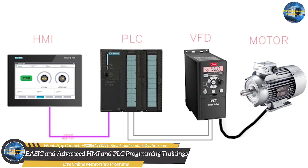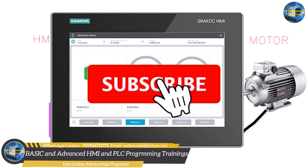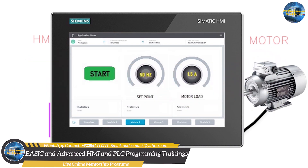In part 2 we will see how we can send the setpoint frequency from the HMI to the PLC and then from the PLC to the VFD. We will also see how to display the actual output frequency on the HMI screen, and how to send and read digital signals to and from the PLC and show them on the HMI screen. That's the end of part one — I hope you liked it. Do share, like, and subscribe to my channel and press the bell icon for more upcoming tutorials on PLC and HMI programming. Till next time, take care and goodbye.